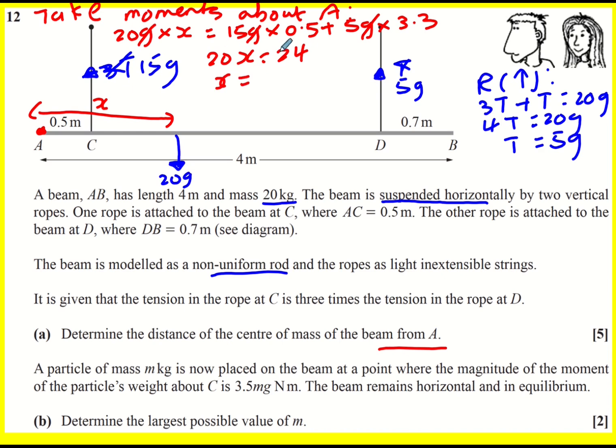So 20x is going to equal 15 times 0.5 plus 5 times 3.3 which gives 24. x is 24 over 20 which is 1.2 meters. So to determine the distance that's it.